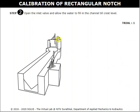Now, click on the inlet valve. The zoom view of it will appear on the right side of the screen. Click on the hand to open the valve and allow water to fill the channel up to the crest level.